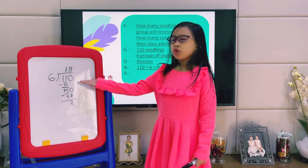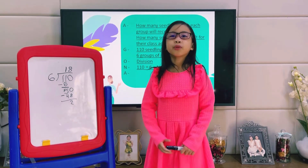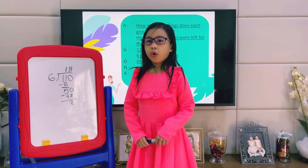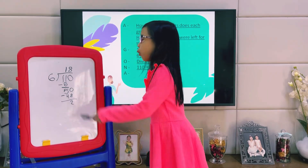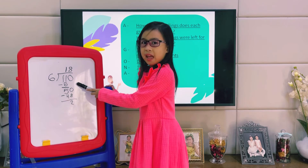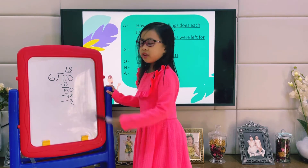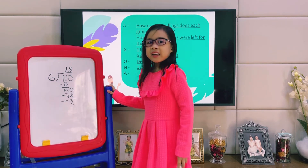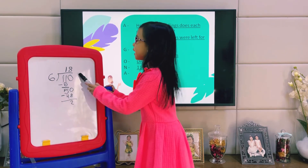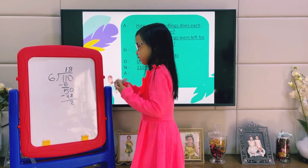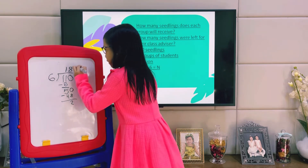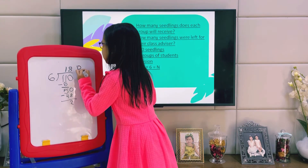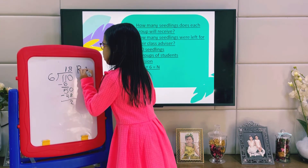50 minus 48 equals 2. There's no more number to bring down. So, 110 divided by 6 equals 18, remainder 2.